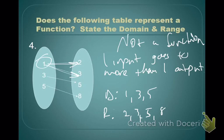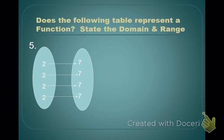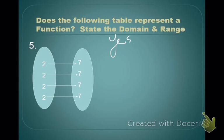There are different ways to show a relation. Take a look at the next one — all the outputs are 7. The question is, is this a function? Yes, this is a function. Each input — just 2 — gets mapped to exactly one output, which is 7. Each input goes to exactly one output. Domain is simply 2, and your range is simply 7.